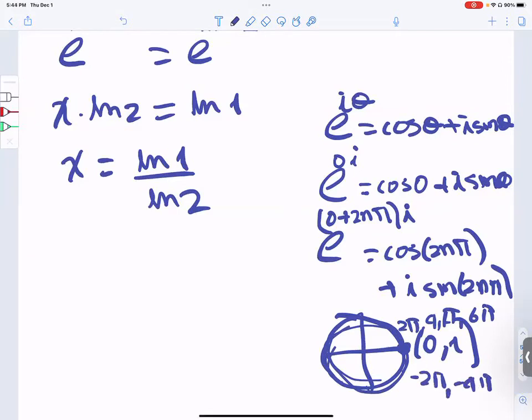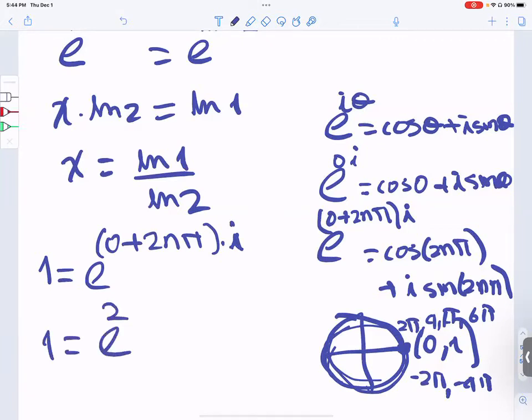1 is equal to e to the 0 plus 2n pi times i. Therefore, 1 equals e to the 2n pi i.